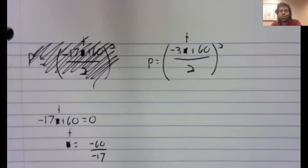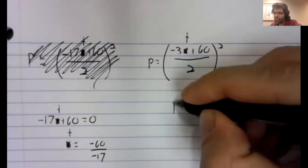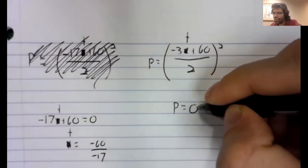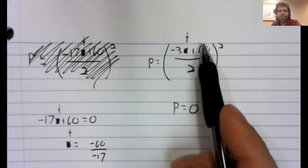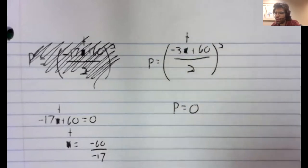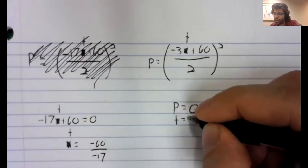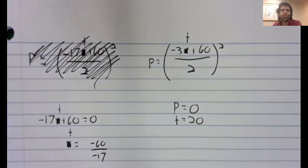So only one solution makes sense of the data here. And we set this population equal to zero. Which, since this is a fraction, amounts to just setting the numerator equal to zero. And we get extinction after 20 weeks. And our example is done.